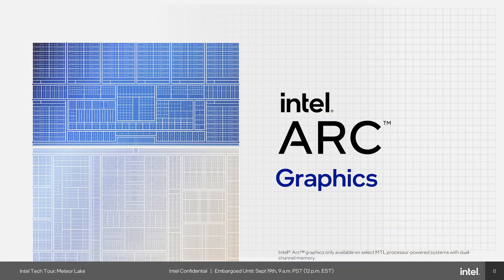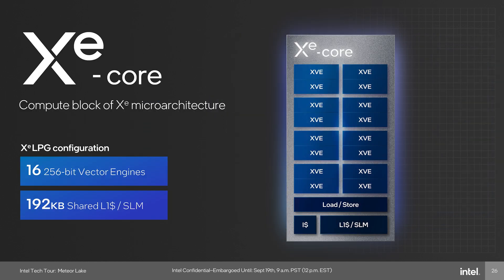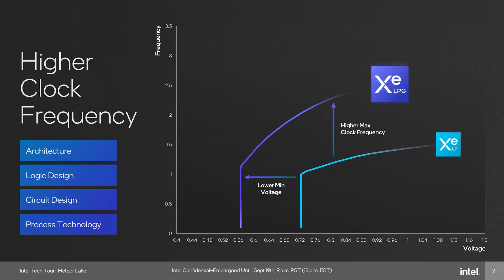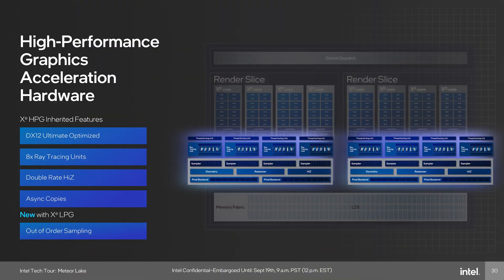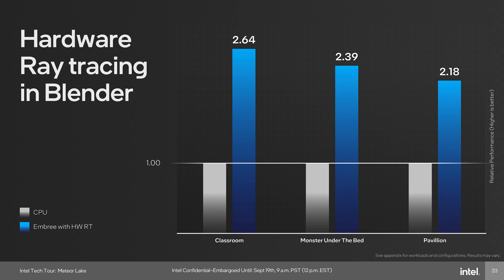Switching to the graphics tile — this is pretty exciting too. The new graphics core, XE LPG, has a 2x performance-per-watt improvement over the 12th Gen XE LP core. It features 8 XE cores made up of 16 vector engines each, for a total of 128 cores, designed to run at lower voltage but considerably higher clock speed — around 2.4 GHz versus the current 1.6 GHz peak. The biggest change is the introduction of 8 dedicated ray tracing units, one per XE core, though you probably won't be playing Cyberpunk on Ultra Psycho ray tracing on these chips.